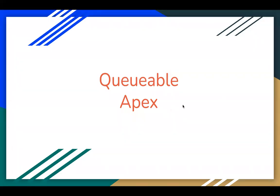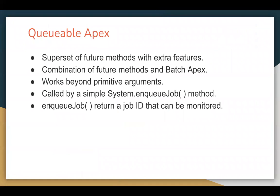Let's understand Queueable Apex. Queueable Apex is basically a superset of future methods, which provide some extra benefits and extra features as well. You might have gone through future methods and batch Apex examples. Queueable Apex can be known as a combination of future methods and batch Apex, and you will feel that in the syntax as well.